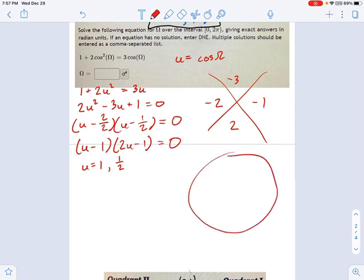So now I just need to go back to my unit circle and say, this isn't u. This is really cosine of omega. Cosine of omega, which is the x values, is 1. Okay, that's all the way on this side. Or 1 half. That's pretty close to the y axis, like right over here.